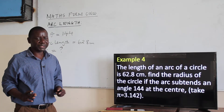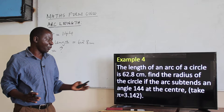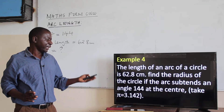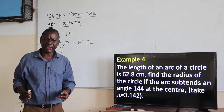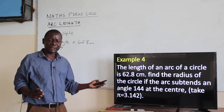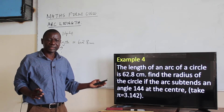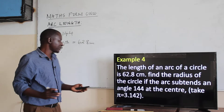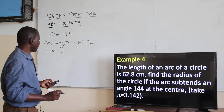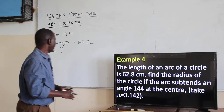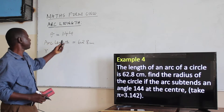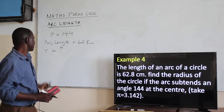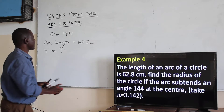We have a question where we want to see how to get the radius if we are already given the arc length. We are given the arc length and the angle, but we are not given the radius. The angle is 144 degrees and the arc length is 62.8. What is the radius?